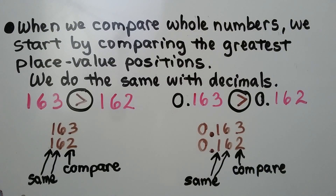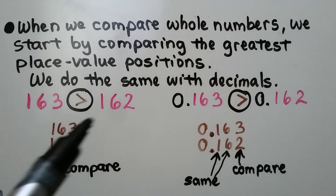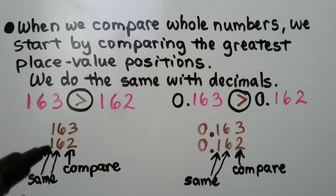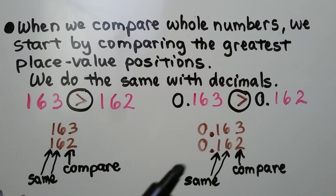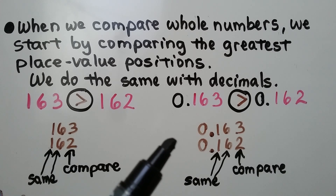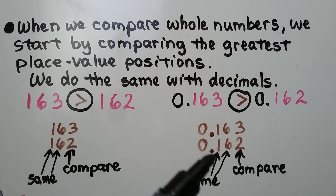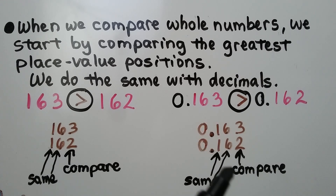When we compare whole numbers, we start by comparing the greatest place value positions — we do the same with decimals. If we're comparing 163 to 162, they have the same digits in the hundreds and tens place, so we compare the ones place. Similarly, when comparing 163 thousandths to 162 thousandths, we compare the ones, tenths, and hundredths places — they're the same — so we compare the thousandths place, and we see 163 thousandths is greater than 162 thousandths.